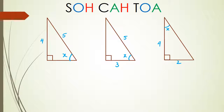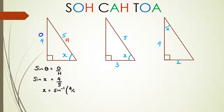As usual, the first step is to label the sides. Here, 5 is going to be the hypotenuse and the side opposite the angle is O, so we have O and H, which means we're going to be using the sine rule. We can write this as: sine θ = opposite over hypotenuse. In this case, sin x = 4/5. To find the angle, we bring sine to the other side, giving us x = inverse sine of 4/5.